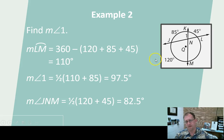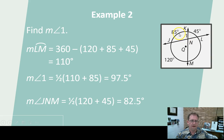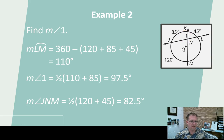Here's another example. They've given three of the four arc measures and want the measure of angle one. Circle Q has two secants passing through it. The arcs are 45, 85, and 120 degrees. The unknown arc: 45 plus 85 is 130, plus 120 is 250. 360 minus 250 gives 110 degrees for the missing arc. Then 85 plus 110 divided by 2 is 97.5 degrees for angle one. And since the adjacent angles are supplementary, 180 minus 97.5 gives 82.5 degrees.